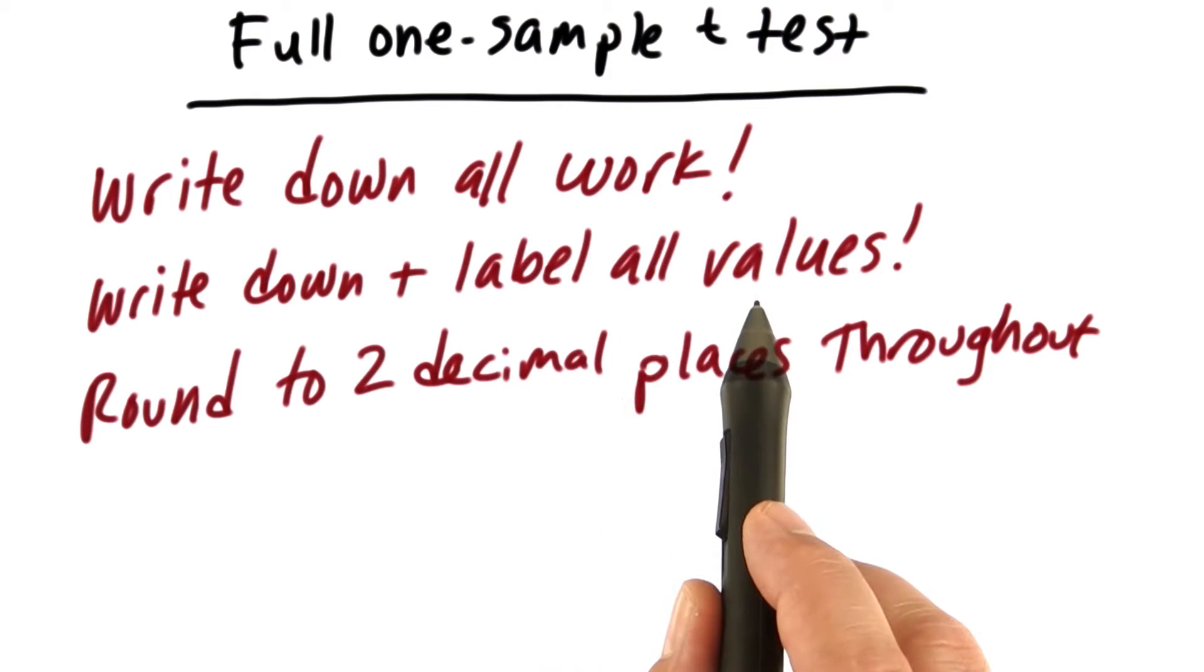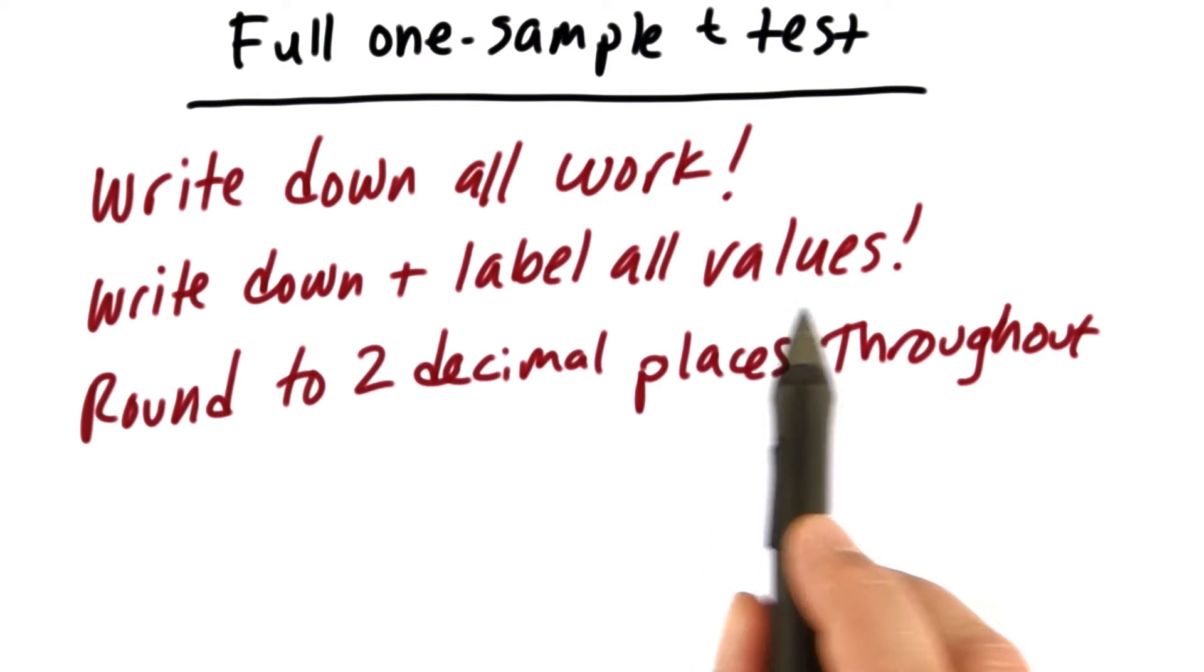Two, write down and label all the values, every intermediate step. You're going to need the values throughout the example.